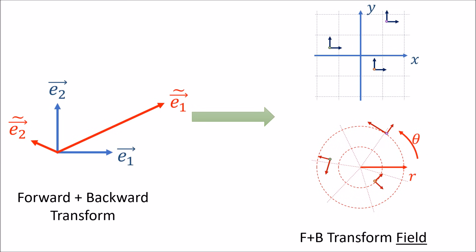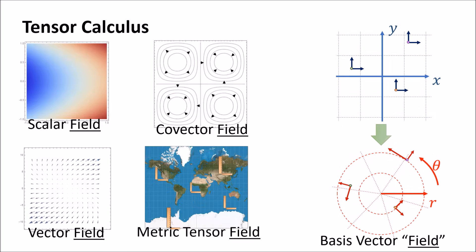This is something you find when changing from Cartesian coordinates to polar coordinates in 2D. And instead of a single forward and backward transform that works everywhere, we have different forward and backward transforms for every single point — almost as if we have a forward transform field and a backward transform field. To sum up, tensor calculus is the study of scalar fields, vector fields, covector fields, metric tensor fields, and any other tensor fields we can come up with, as well as how coordinate basis vectors change from point to point in space.